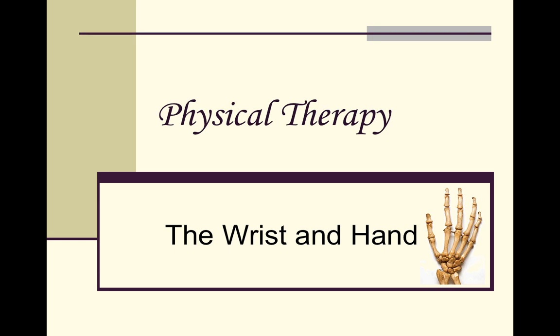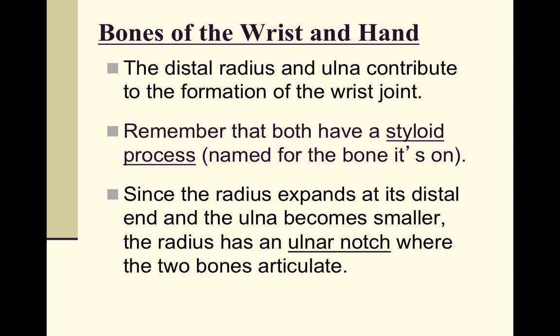This video covers the bones and ligaments of the wrists and hand. Recall from the elbow discussion that the radius and ulna both have a styloid process named for their respective bone: radial styloid and ulnar styloid. The ulnar styloid is the one you can feel most easily, located at the base of your wrist on the back side on the pinky side.